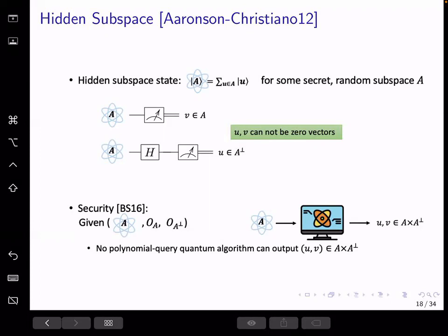When we give a quantum adversary one copy of state A and access to membership oracles for A and A perp, which check if an input vector is in A and if an input vector is in A perp, respectively, and outputs one only if the input vector is in the subspace. Such a quantum adversary bounded polynomial in terms of queries cannot produce two vectors, one in A and one in A perp, and both are not zero. And our security will rely on this probably hard problem.